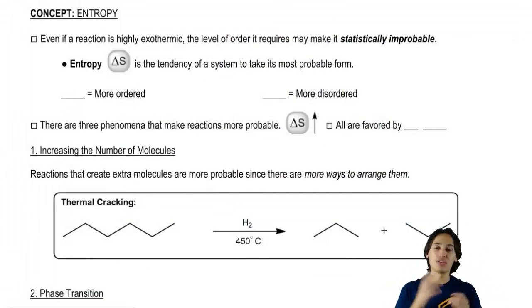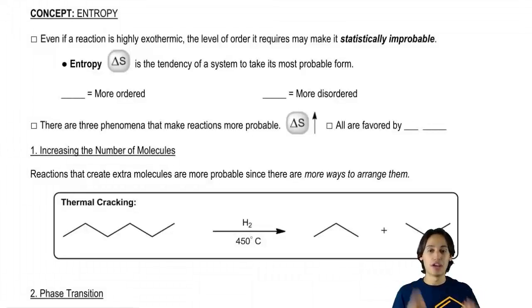Entropy is generally stated as a measure of disorder in the system, but that's a really confusing definition. I would rather go with an easier definition: entropy is the tendency of a system to take its most probable form.